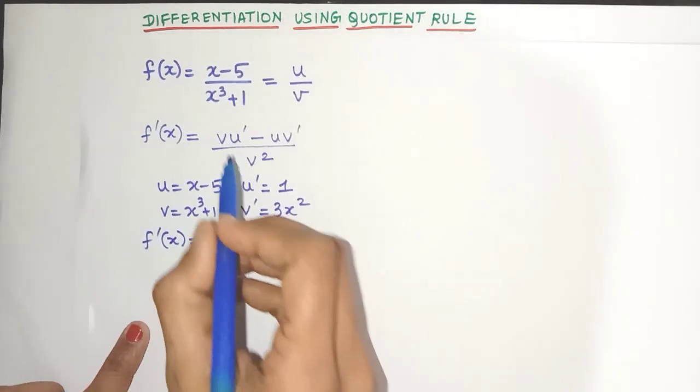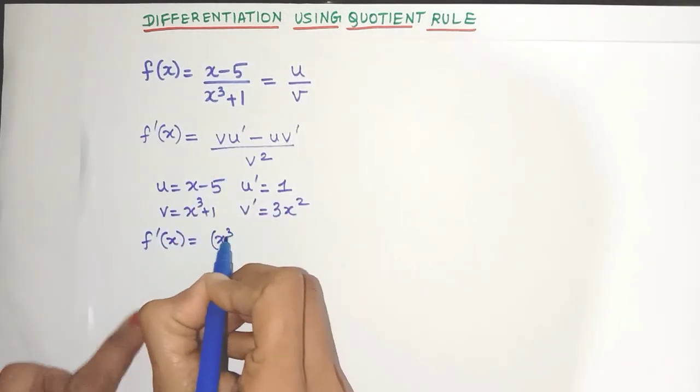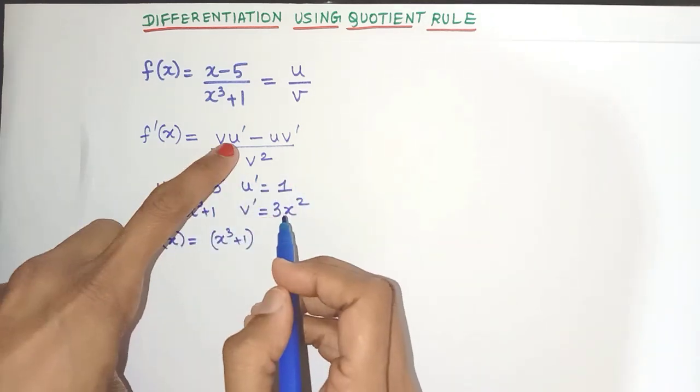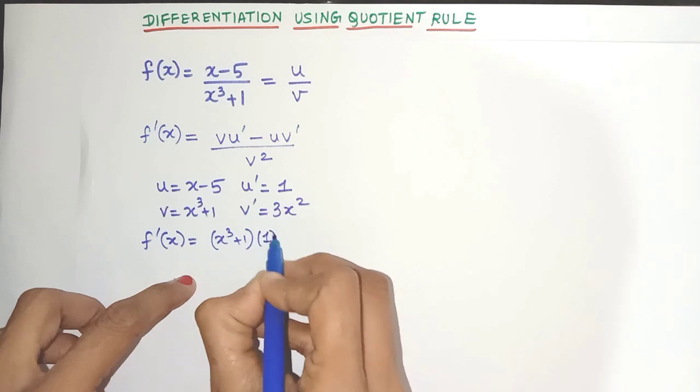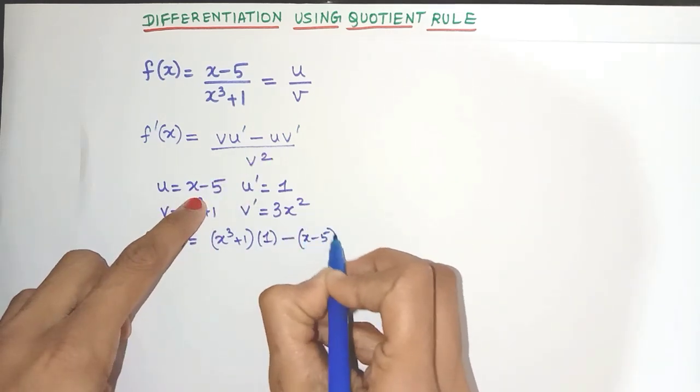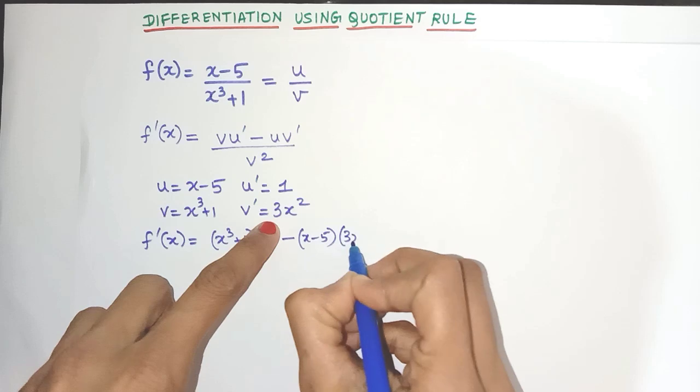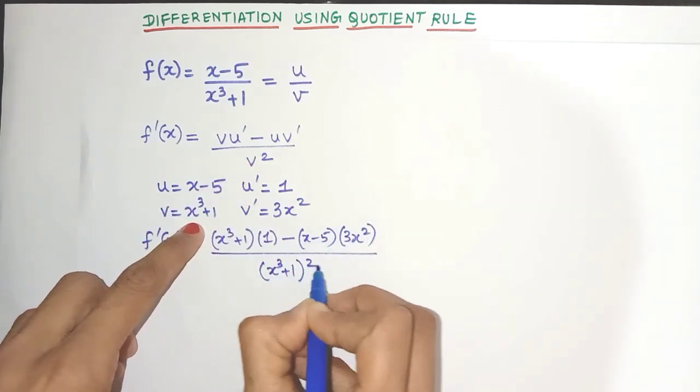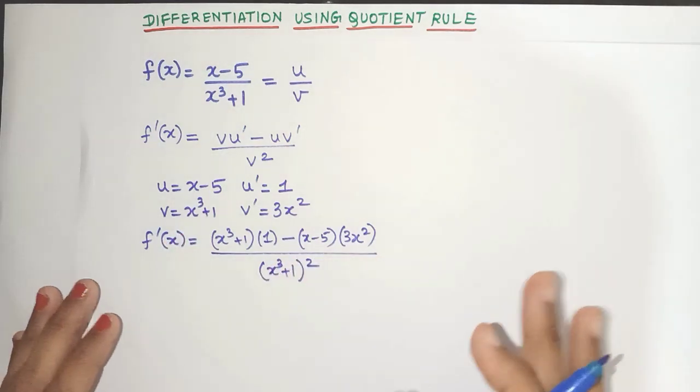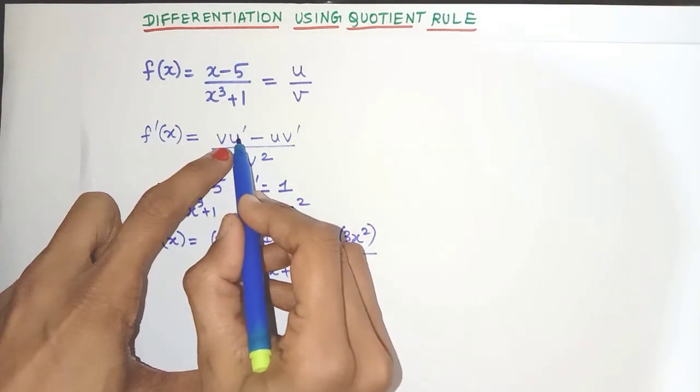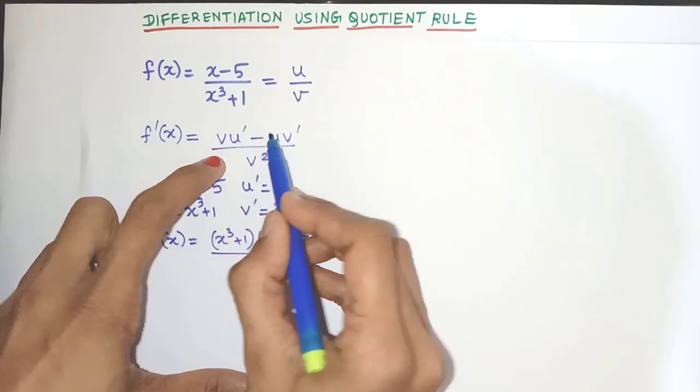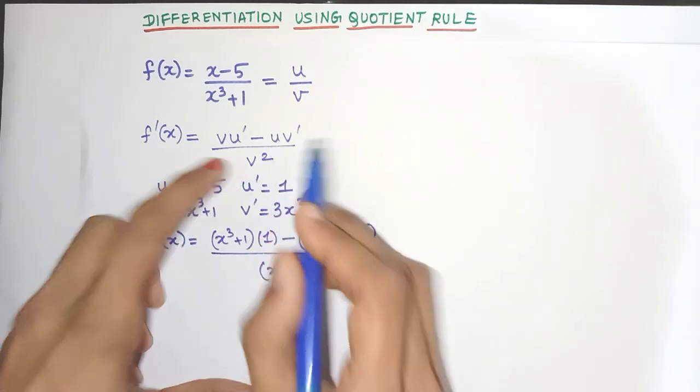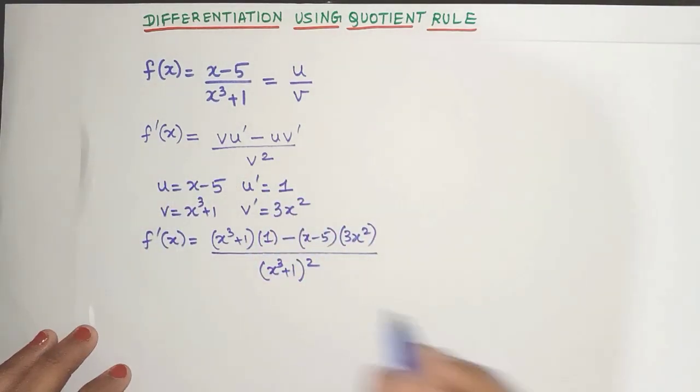The derivative is nothing but v. So v is nothing but x cube plus 1. Very carefully substituted friends don't get confused into the derivative of u which is 1 minus u. u is x minus 5 derivative of v over here divided by v square which is x cube plus 1 the whole square. And easy to remember also friends just write the denominator multiplied by the derivative of the numerator minus numerator multiplied by derivative of denominator divided by the square of denominator. Very easy to remember the formula also.